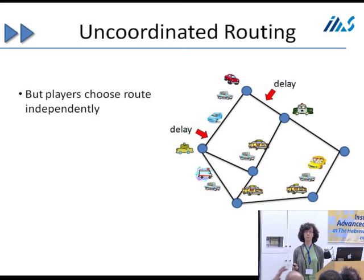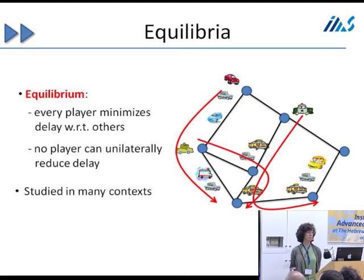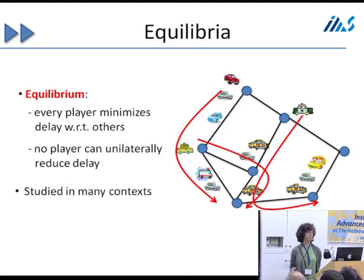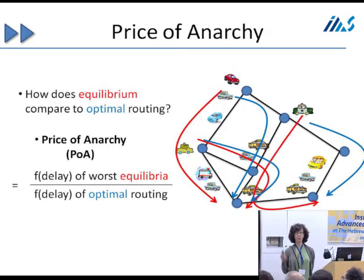But here we don't have a choice about the optimal routing because players choose their routes independently, and their delay is going to depend on the routes other players choose. We're interested in the equilibrium of the system, and this has been studied in many contexts. We're going to be comparing the function of delay for the worst equilibria to the delay of the optimal routing.